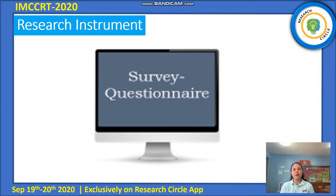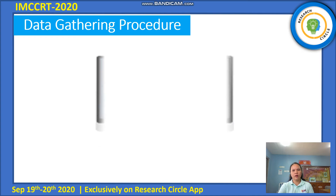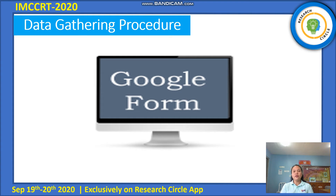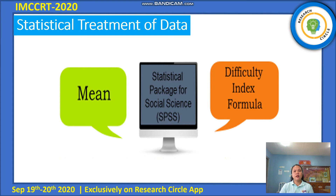It was validated by five mathematics in the modern world instructors. The computed mean value of 4.4 revealed that the validity of the questionnaire is very high. Upon approval of requests from the office of the president and college deans, the researcher floated the questionnaire to the respondents through Google Forms. 100% of the questionnaires were collected and responses were tallied and submitted for statistical treatment. The statistical package for social sciences was utilized; specifically, the mean was used to describe student performance and validity of the strategic intervention material, while the difficulty index formula was used to determine the difficulty index of the test items.